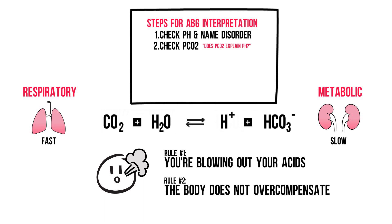Vice versa for acidosis: if pH was low and pCO2 is high, your CO2 explains the pH — so a respiratory acidosis. If it doesn't, it's probably metabolic. Step 3: Check bicarbonate. Check to see if your thoughts in step 2 were correct or not. Sometimes there are combined acid-base disturbances, and you'll develop a feel for when your bicarb level corresponds with pH and CO2. When in doubt, use the nomogram or a calculator.